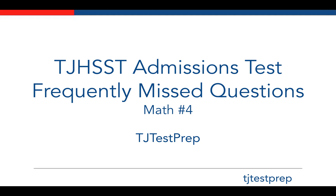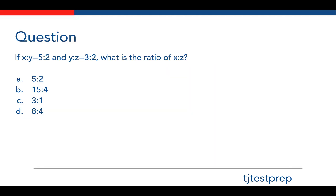Now on to the problem. The question we have here is: if the ratio of x to y is 5 to 2, and the ratio of y to z is 3 to 2, what is the ratio of x to z? Answer this question by yourself first, and then come back to get the answer and solution.